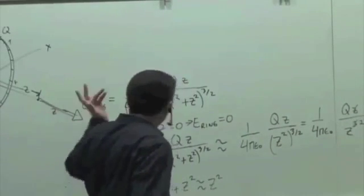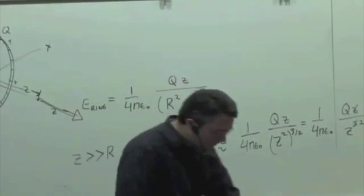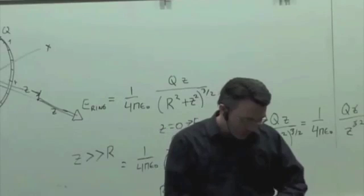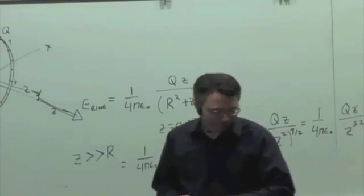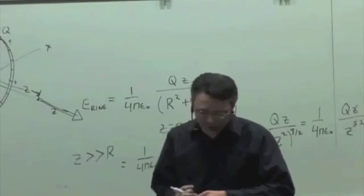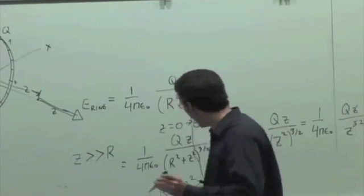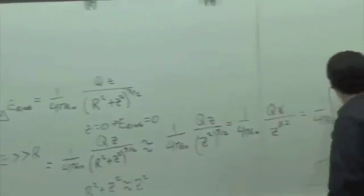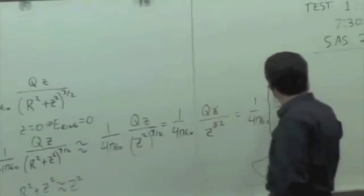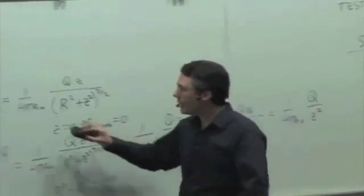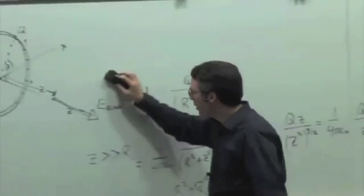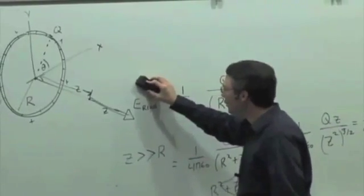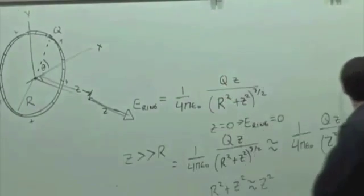So why is this important? The ring is actually useful for deriving other results that we'll be running into quite a bit over the course of the semester. One situation is the electric field of a uniformly charged disk.